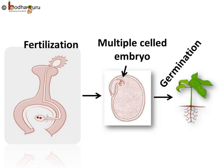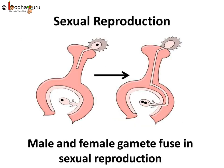Then the zygote cell multiplies to form an embryo in the seed. The embryo grows into a seedling if the seed gets proper warmth, air and water. When male and female gametes fuse to create a zygote, that kind of reproduction is called sexual reproduction.